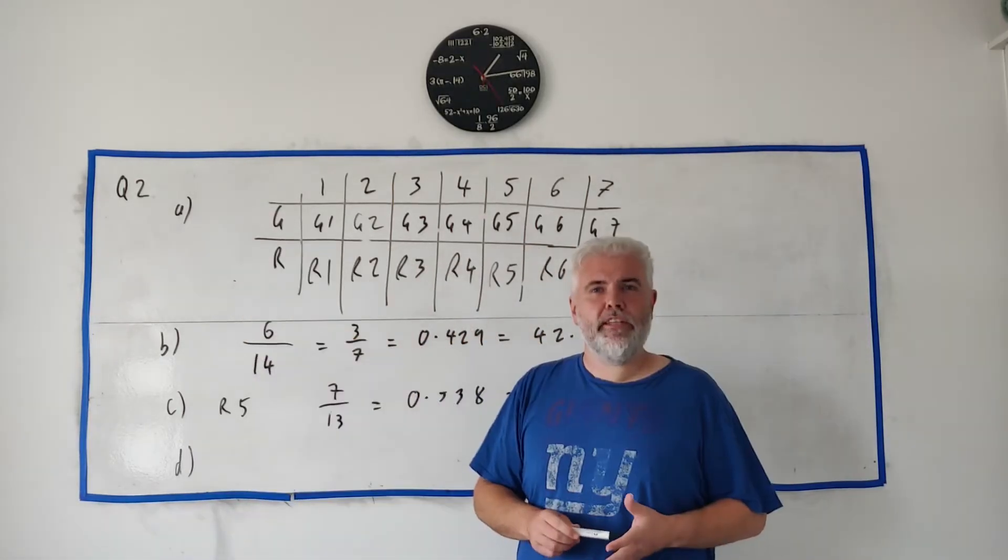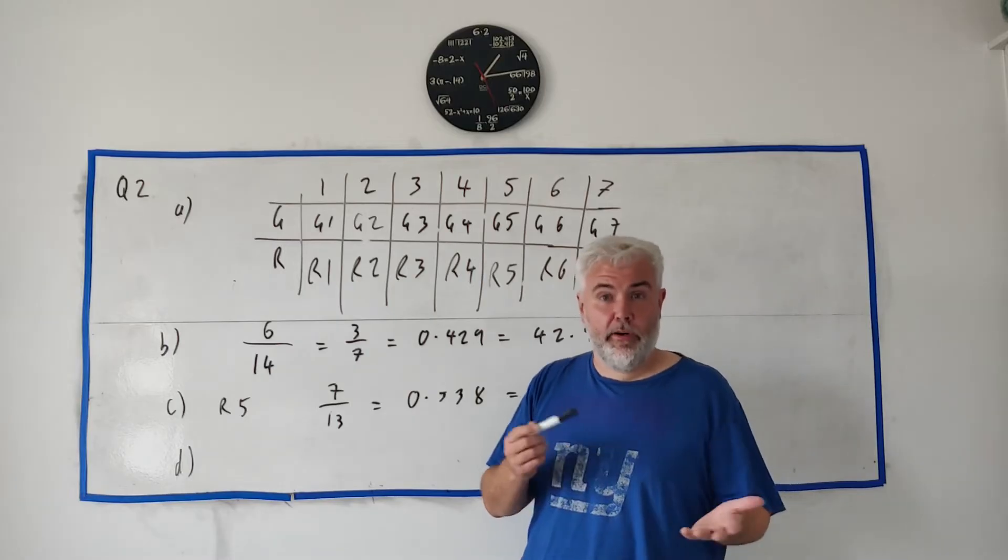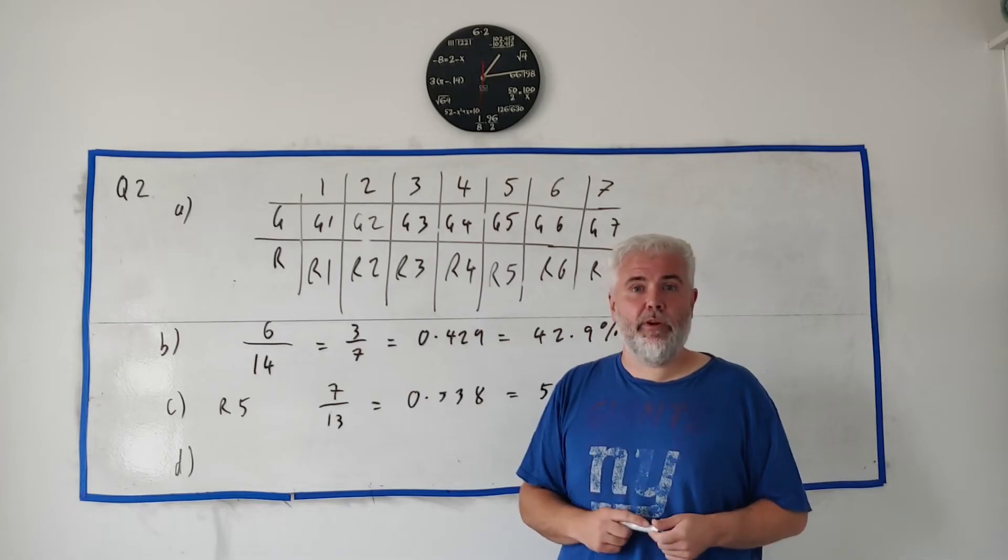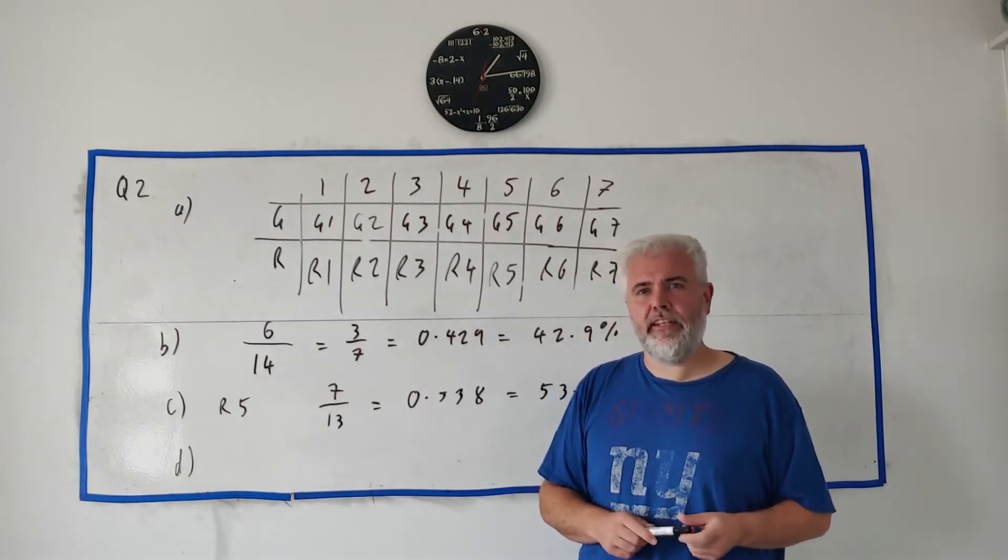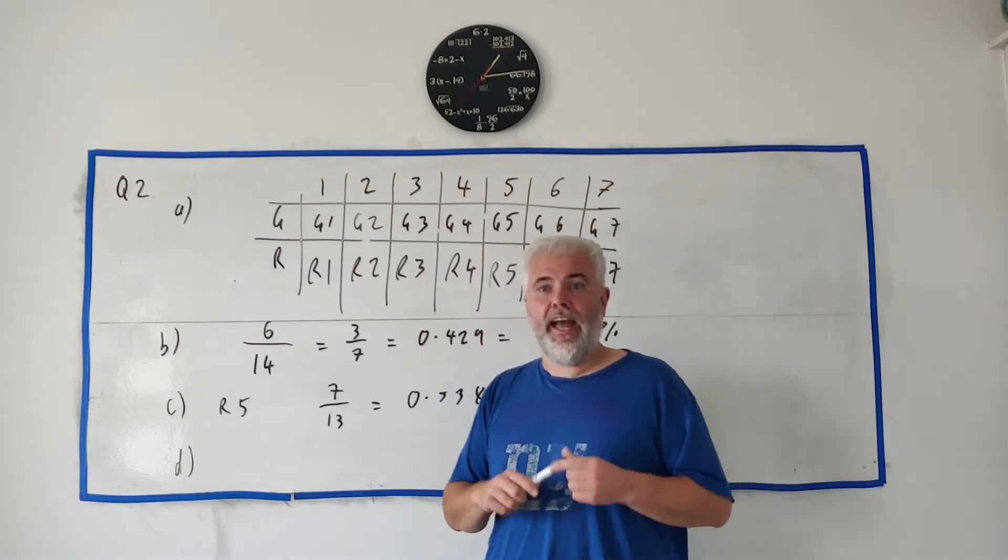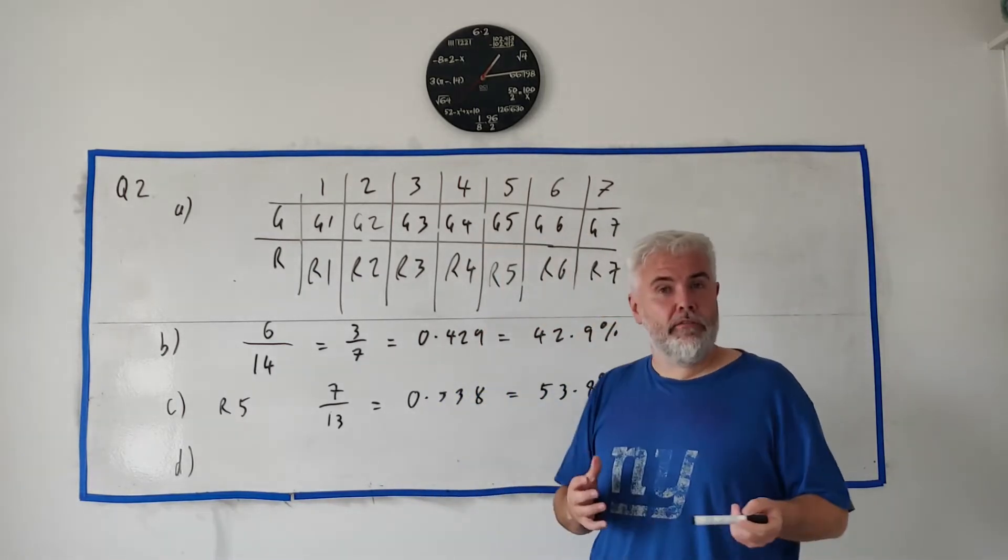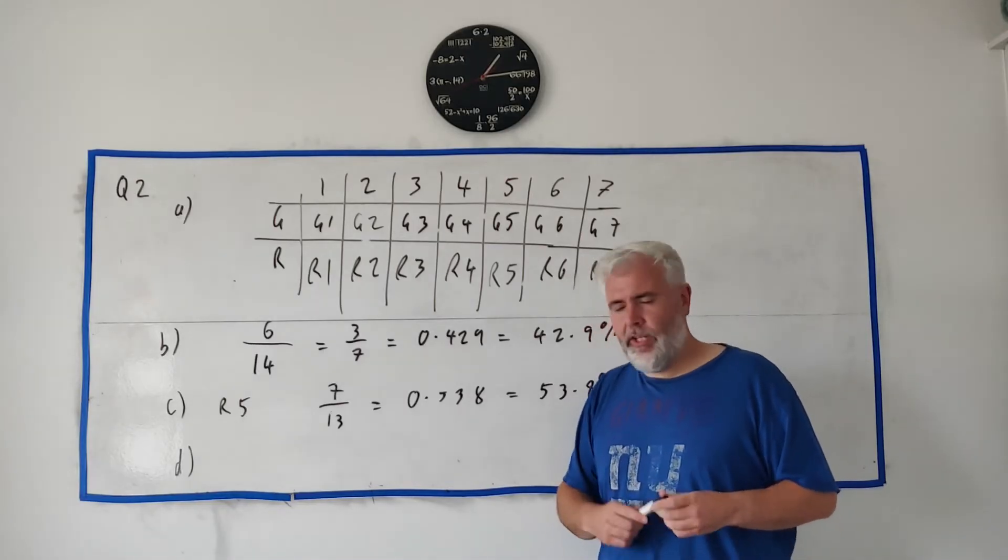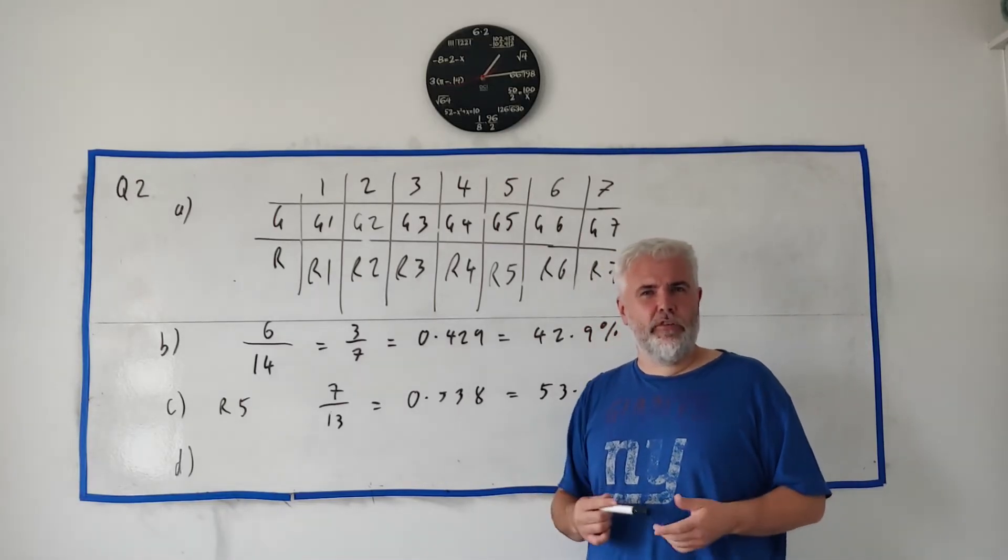All these numbers are identical; there's no difference between them. In part D, it tells us Sean picks a card at random again and doesn't replace it. He then picks a second card at random. Find the probability that that second card is a different color and a different number from the first. That seems quite difficult.